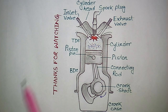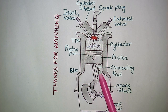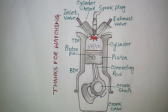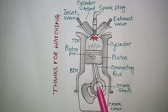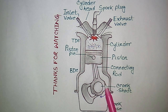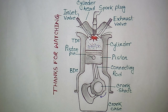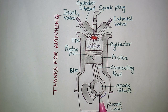Next is the connecting rod. This is the connecting rod — it connects the piston through the piston pin. This is the piston pin. The connecting rod converts the reciprocating motion of the piston to the rotary motion of the crankshaft. The crankshaft then transfers the power to the flywheel of the engine or to the output shaft.